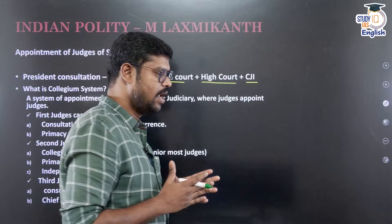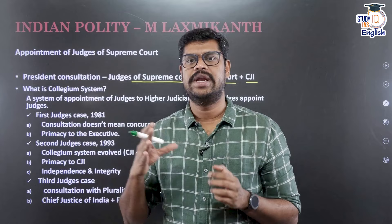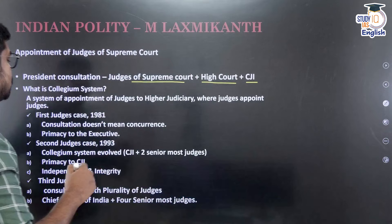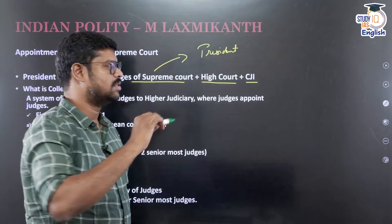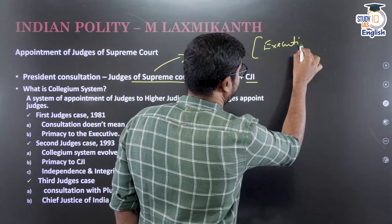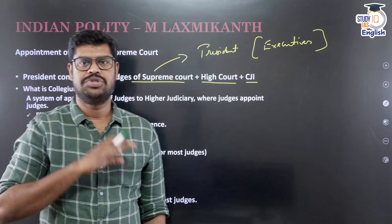This is not a discretionary power of the President — the President acts on the aid and advice of the Council of Ministers. In the original constitution and even today, the appointment power is given to the President, meaning the executive will make the appointment to the judiciary. But today what we actually follow is that the judiciary has the primacy in appointing the judges of the Supreme Court.